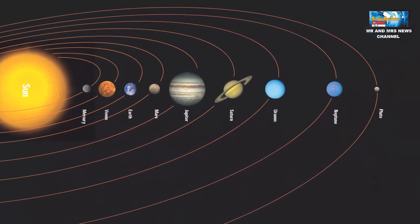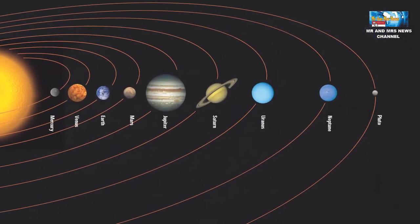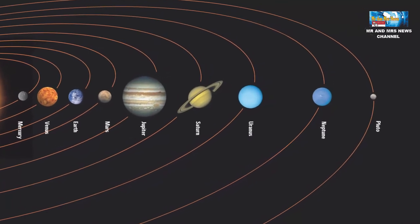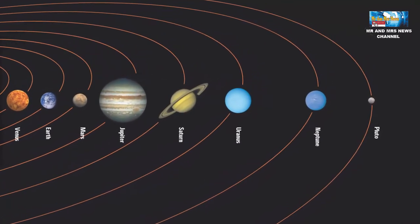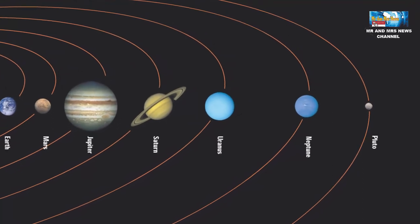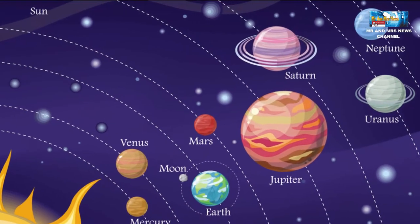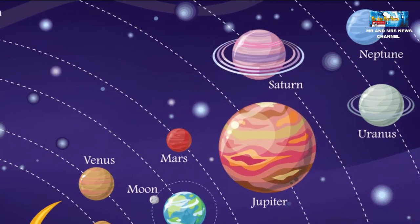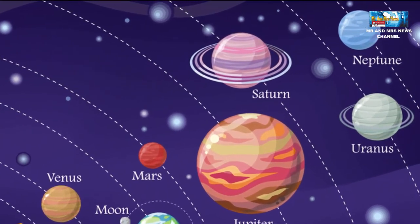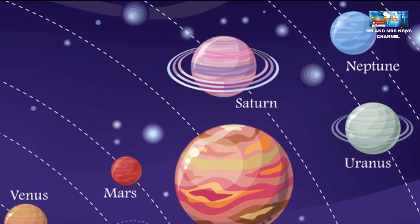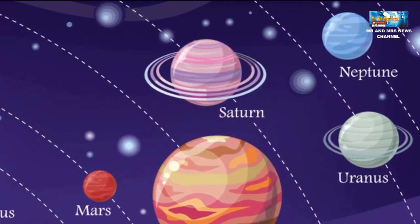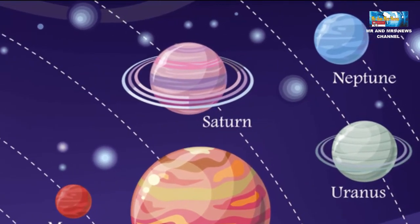Unlike Earth which is an inner planet, Neptunus is at the edge of the solar system. Previously, Pluto was designated as the farthest planet in the solar system. But in 2006, the International Astronomical Union designated Pluto as a dwarf planet. Pluto's demotion automatically made Neptunus the farthest planet in the solar system.